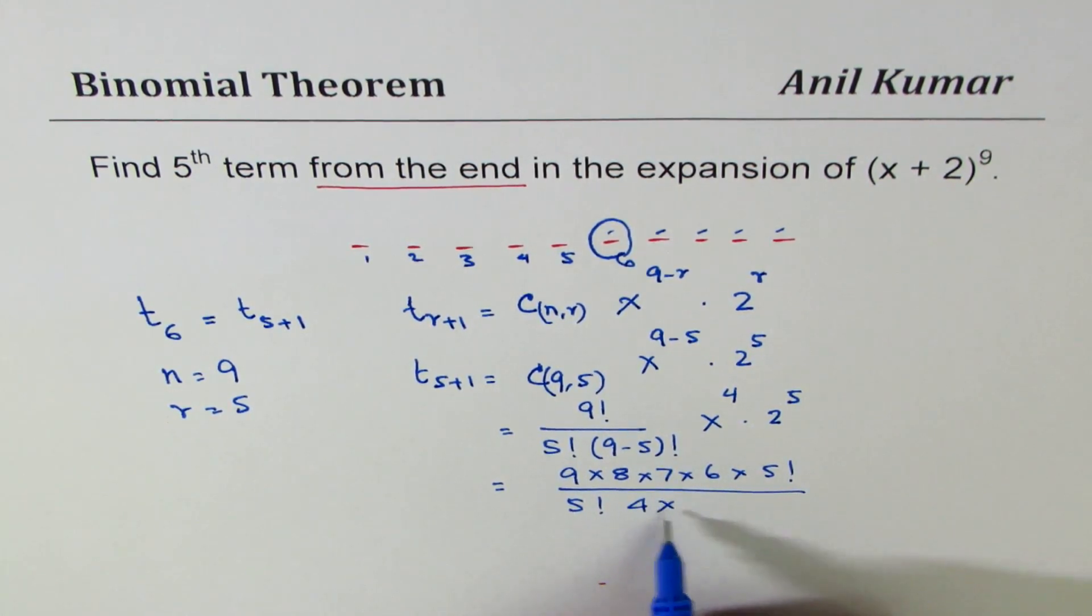9 minus 5 is 4 factorial. We can write this as 4 times 3 times 2 and we have x to the power of 4.